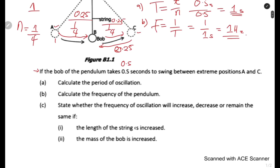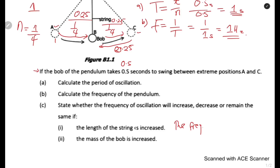For part (c)(i), state whether the frequency will increase, decrease, or remain the same if the length of the string is increased. The length of the string is one factor that affects the period — increasing the string length increases the period. Since frequency is inversely proportional to period, if the period increases, the frequency decreases.